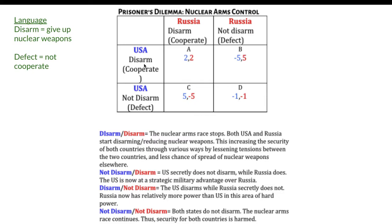We'll say you're Russia. Now, if we both decide to disarm, I get two, you get two. The higher the number, the better for our country. Two and two is pretty good - we both cooperate, we both disarm, which means giving up our nuclear weapons. The nuclear arms race stops, both the USA and Russia start disarming, reducing nuclear weapons, increasing the security of both countries by lessening tensions and reducing the chance of the spread of nuclear weapons elsewhere.